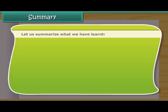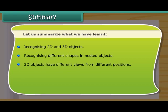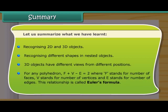Let us summarize what we have learned: recognizing 2D and 3D objects, recognizing different shapes in nested objects, 3D objects have different views from different positions, and for any polyhedron F + V − E = 2, where F stands for number of faces, V stands for number of vertices, and E stands for number of edges. This relationship is called Euler's formula.